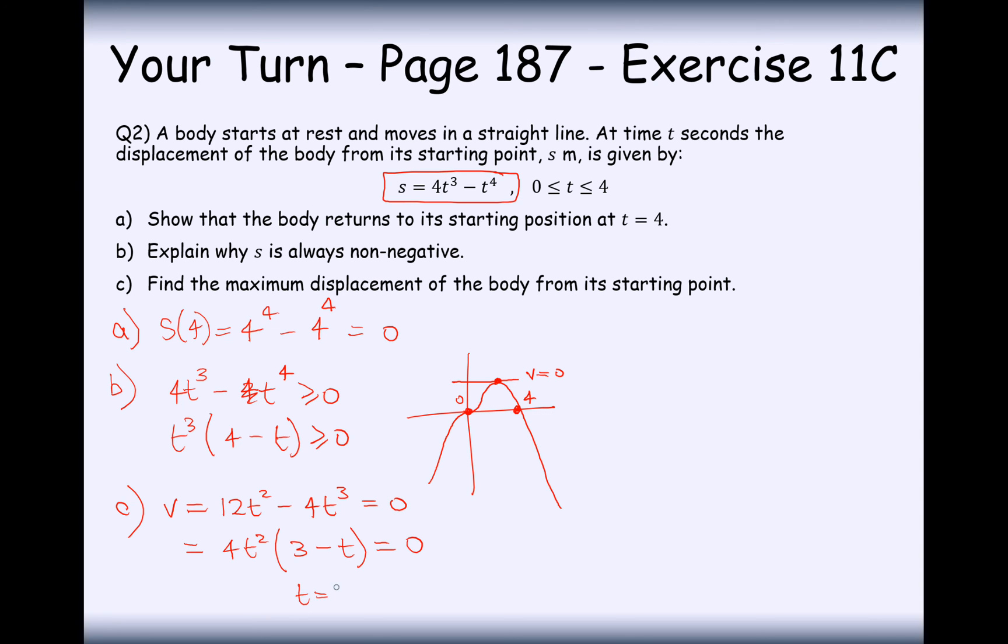So factorise out 4t squared, and we'll get then 3 minus t equals 0. So therefore, t must equal 3. We don't want t to equal 0, because that won't give us a maximum velocity.